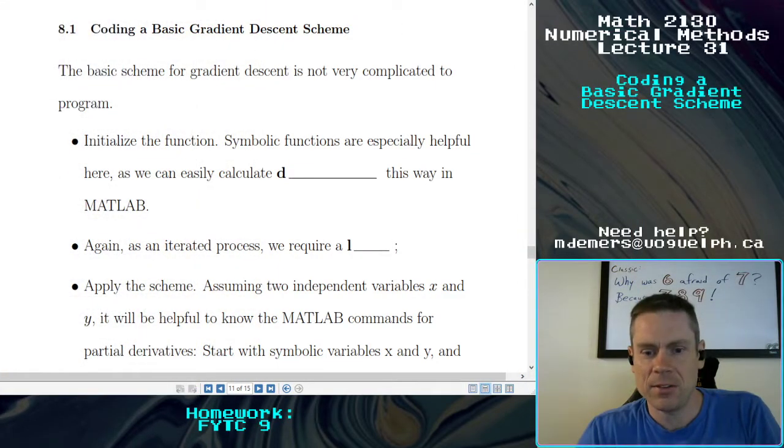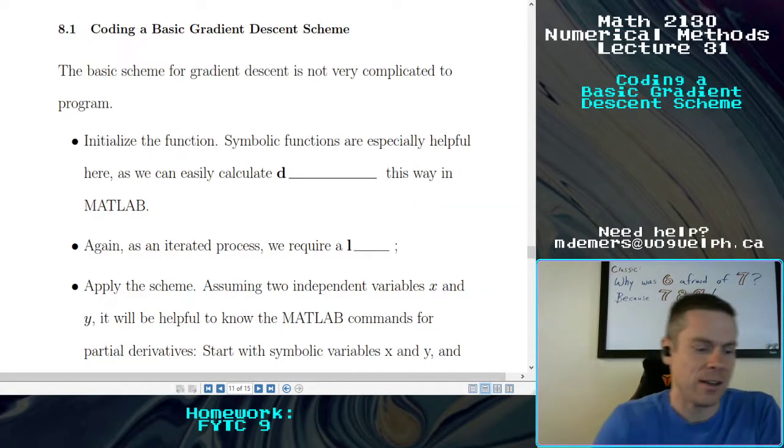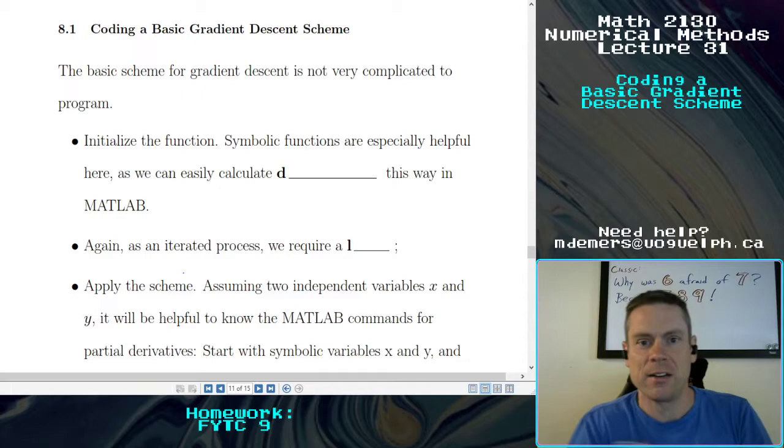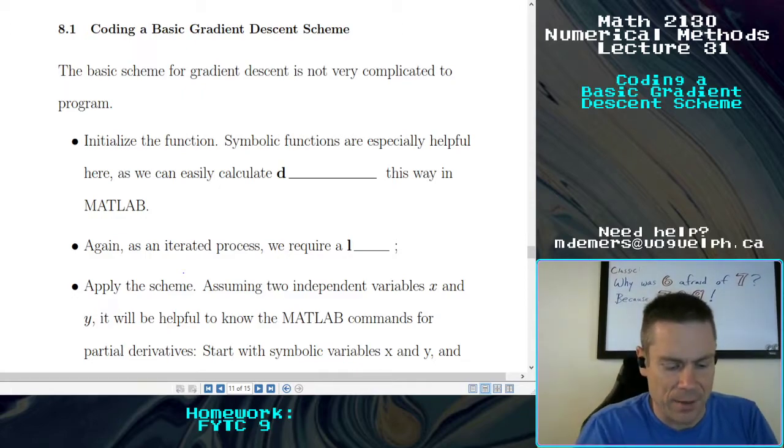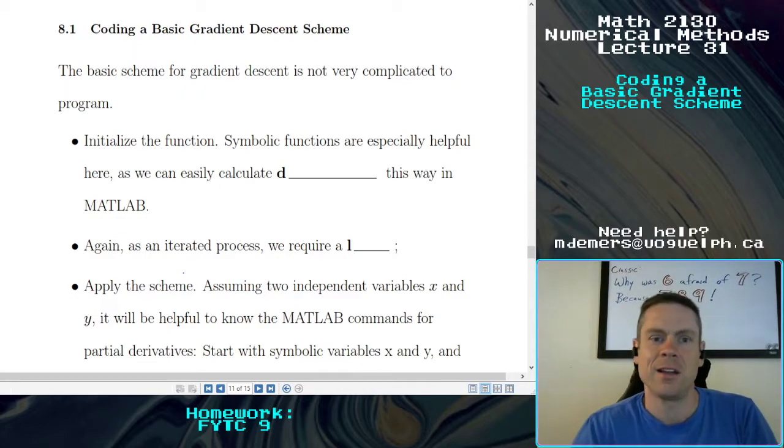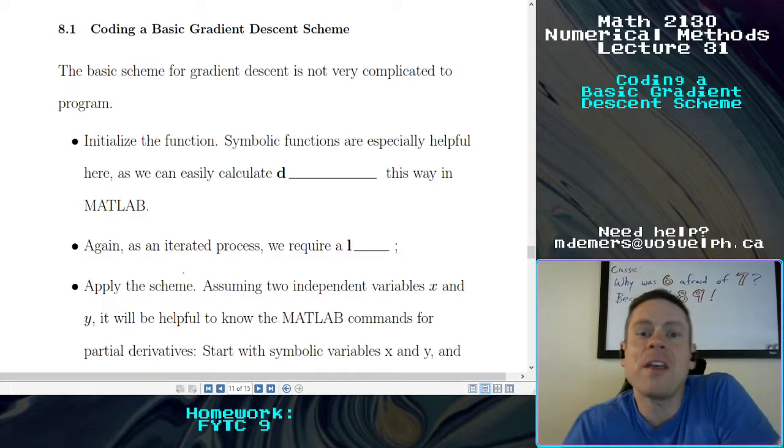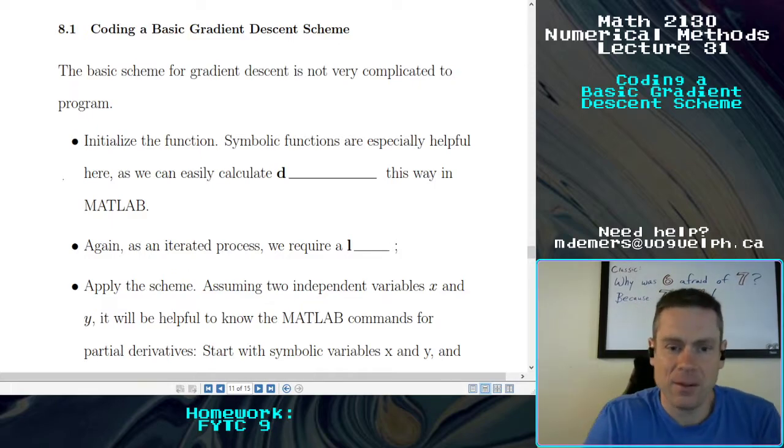This is a topic on coding a basic gradient descent scheme and it's really not that out of hand. We have all the different ingredients that we have used in other schemes and other logic and here I'm even going to provide you with a flowchart as well as some source code. So what are the things that we need? Well, it's not very complicated.